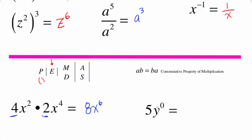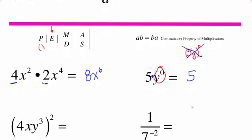Now here's a very common problem. People remember that the zero exponent means one, so they think 5y to the zero is one. But it's not. Because according to order of operations you do the exponent first. So there is actually only one thing being raised to the zero power and that's y — y is being raised to the zero power, not 5y. The problem was not written as (5y) to the zero; it was 5 times y to the zero, which means 5 times 1, or just 5. That's a very common mistake.